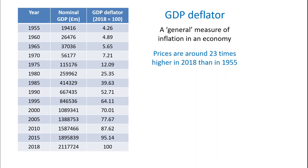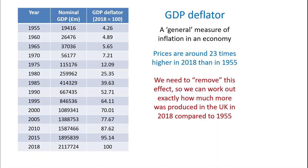Looking at the data, we can say that prices in 2018 reflected by the GDP deflator are around 23 times bigger than in 1955, when our index value was 4.26. So clearly prices have gone up 23 times, whereas nominal GDP looks like it has gone up about 109 times. So what we need to do is work out what the change in overall real GDP actually is.